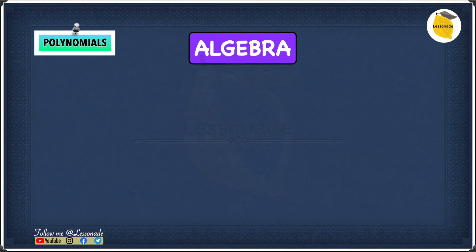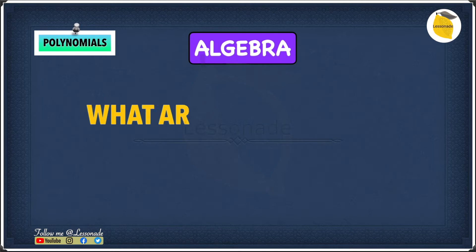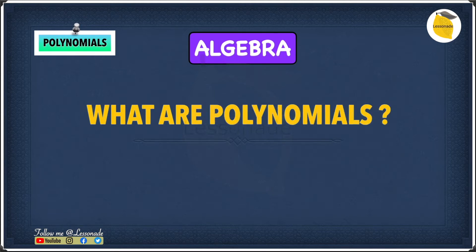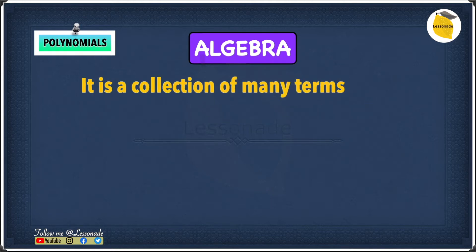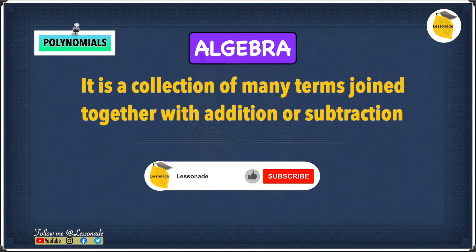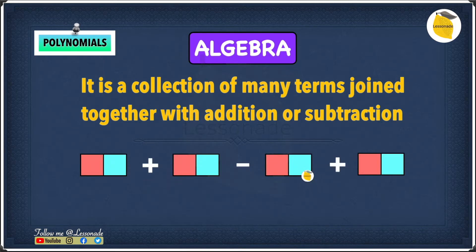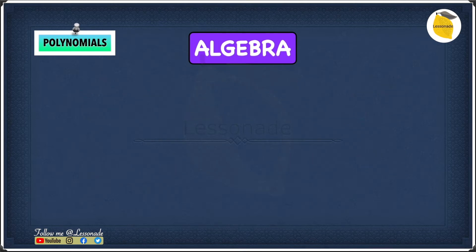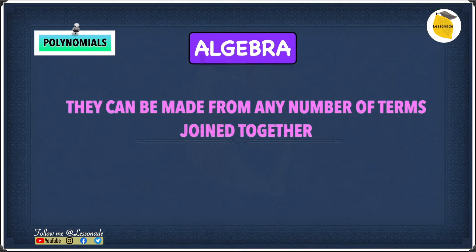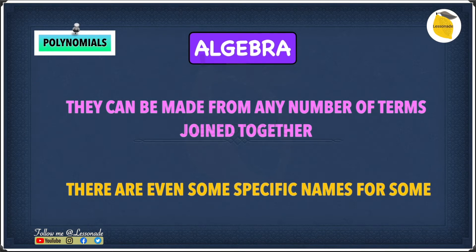Now let's go on to see what are polynomials. A polynomial is a collection of many terms joined together with addition or subtraction. Another thing to know about polynomials is that they can be made from any number of terms joined together, and there are even some specific names for some of them.